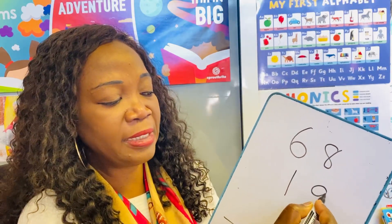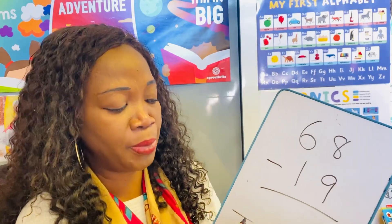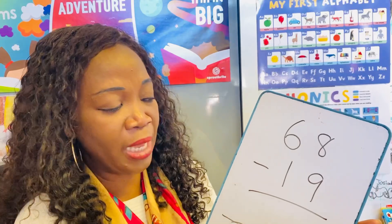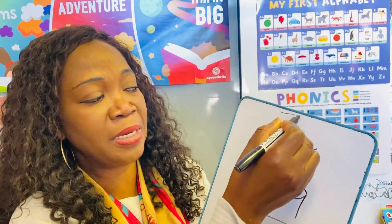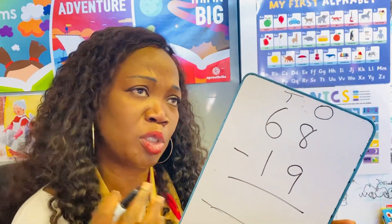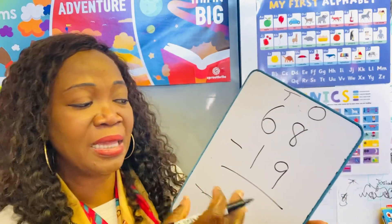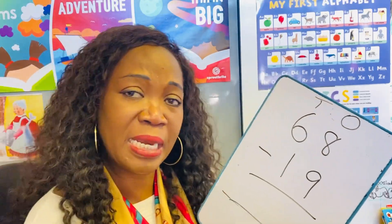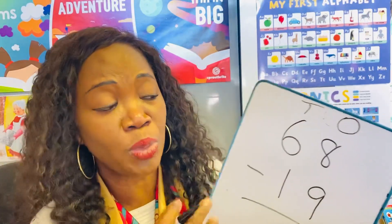Let's try another one. Let's say you have 68 take away 19. I hope you can see the whiteboard. So you have 68 — remember your tens are here and your ones are there. We start from the ones: eight take away nine. That might not be possible because you can't have eight sweets and give nine away.